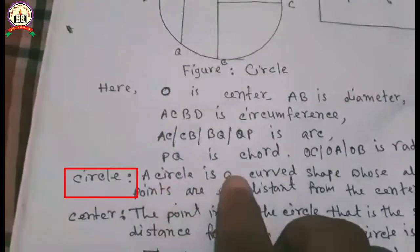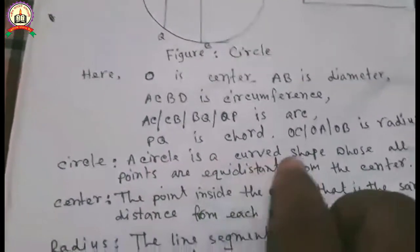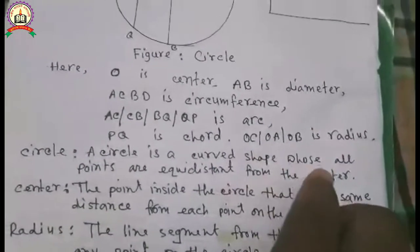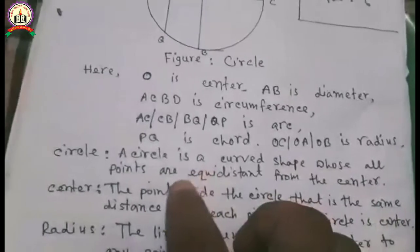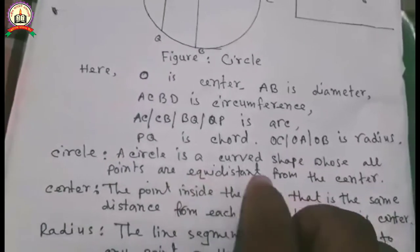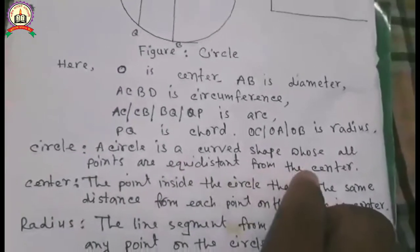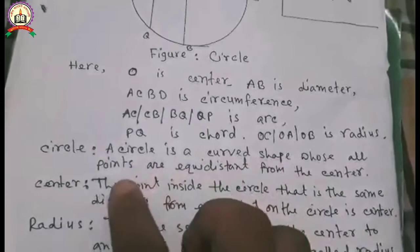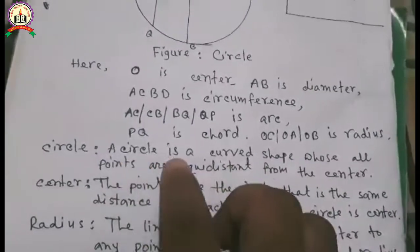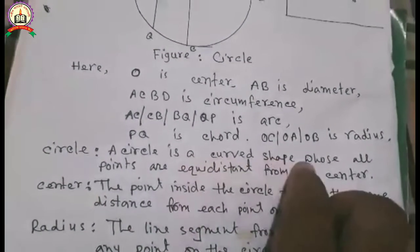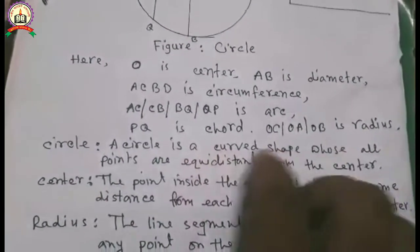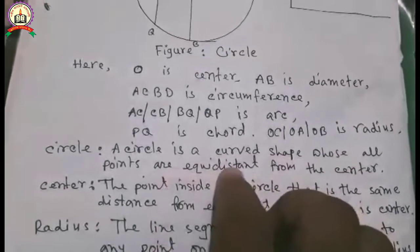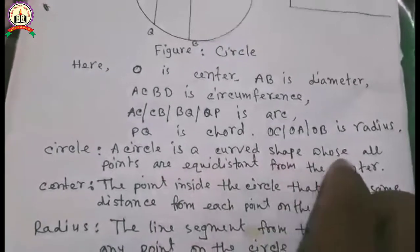A circle is a curved shape whose all points are equidistant from the center.